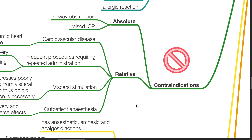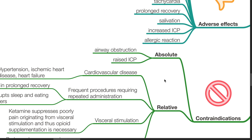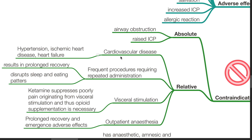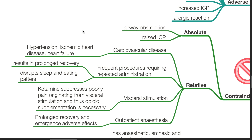Contraindications for ketamine. Absolute contraindications include airway obstruction and raised ICP. Relative contraindications include cardiovascular disease such as hypertension, ischemic heart disease, and heart failure. Frequent procedures requiring repeated administration of ketamine result in prolonged recovery and disturbed sleep and eating patterns. Ketamine suppresses poorly pain originating from visceral stimulation, and thus opioid supplementation is necessary. Ketamine should not be used for outpatient anesthesia because it results in prolonged recovery and emergence side effects.